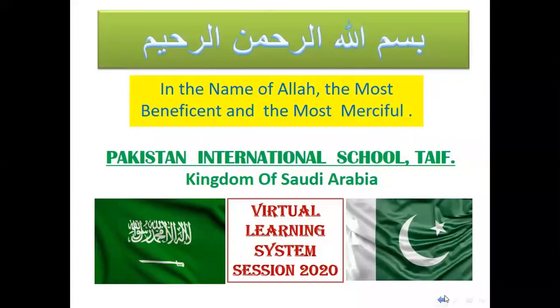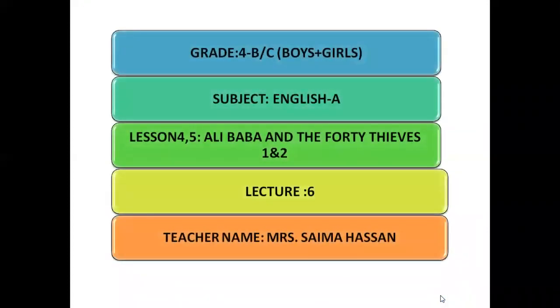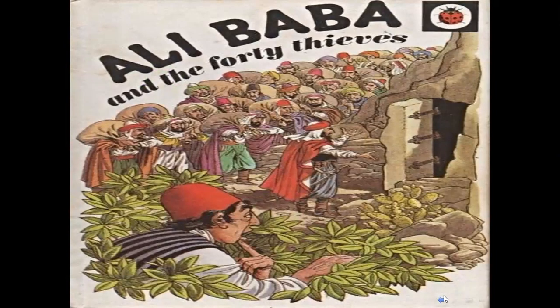In the name of Allah the most gracious and the most merciful, assalamu alaikum to all. Welcome to the virtual learning system of Pakistan International School. Dear students, today we are going to start lessons number four and five, because this is a story about Alibaba and the 40 Thieves, chapters one and two, from your English A book. Open your books and come to chapter four. After the initial reading, in the next lecture we will do the exercises.